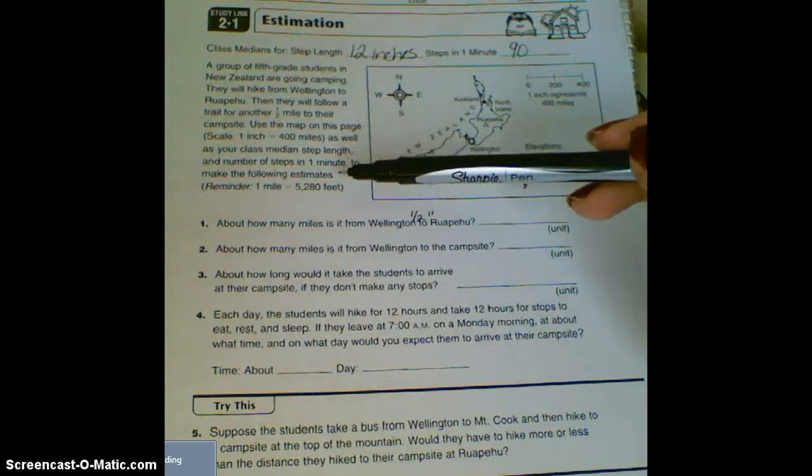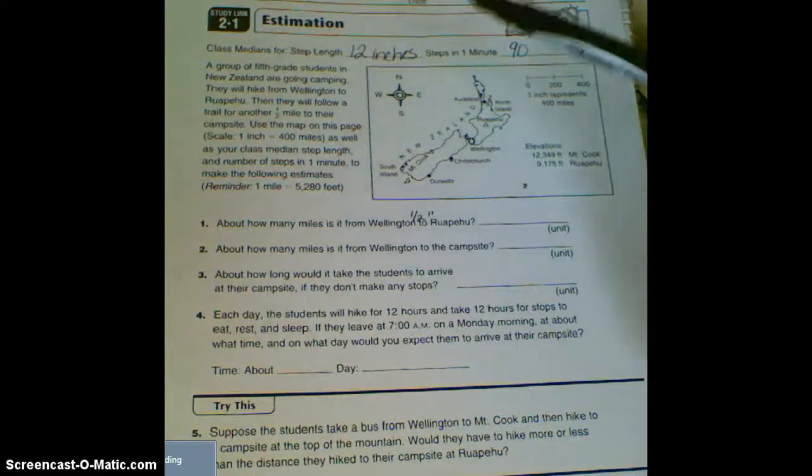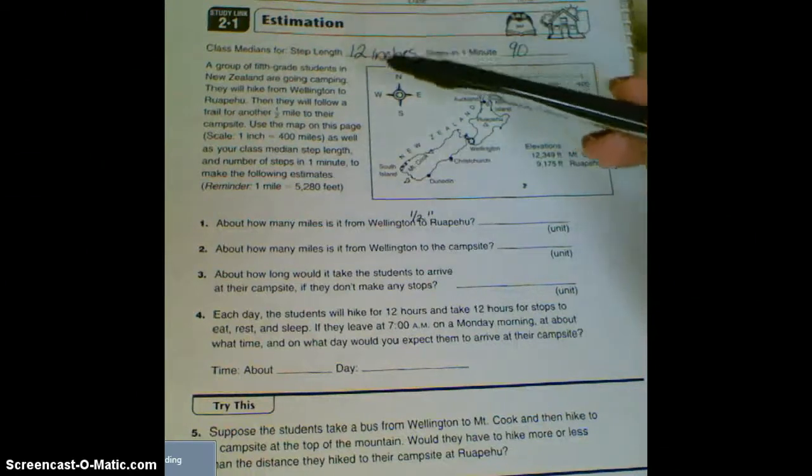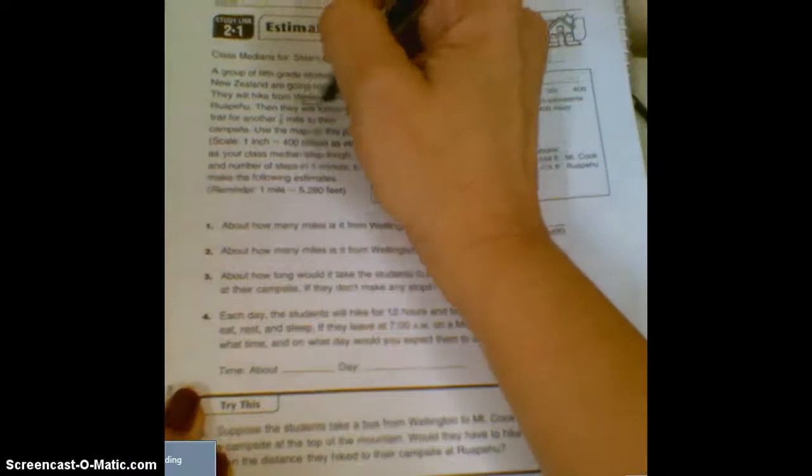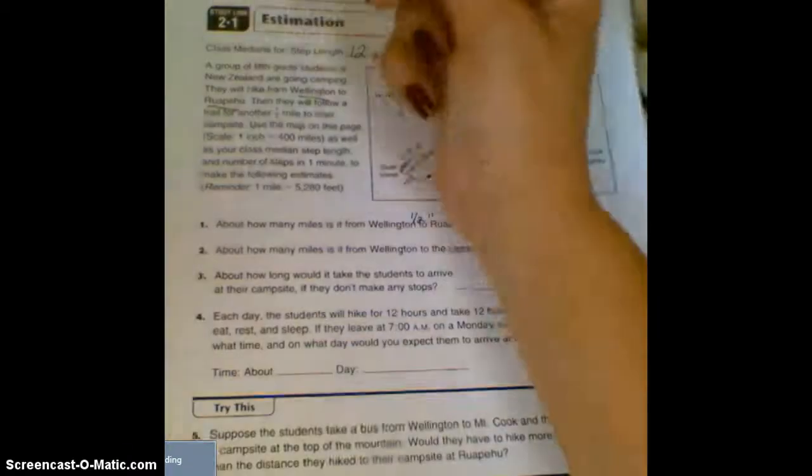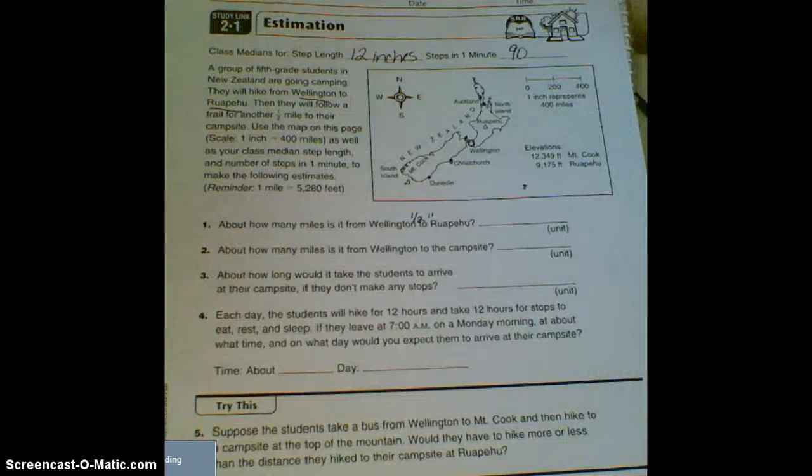Okay, so the first thing we need to do is some measuring. We need to measure from Wellington to this name that starts with an R that I can't pronounce. You're going to need a ruler. Pause now if you need to go grab one.